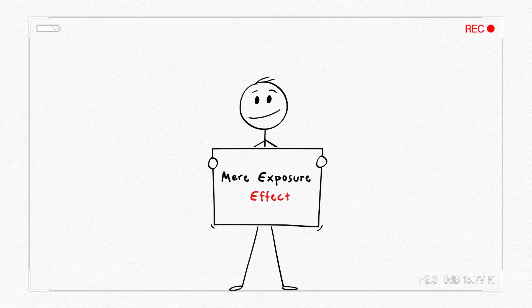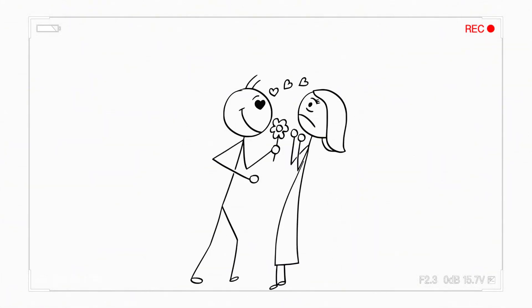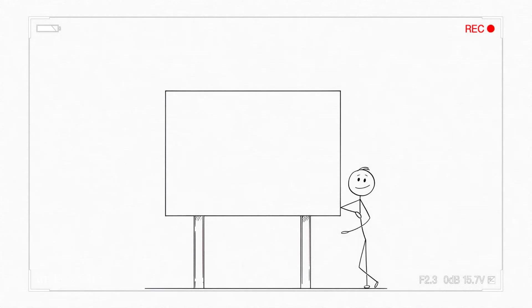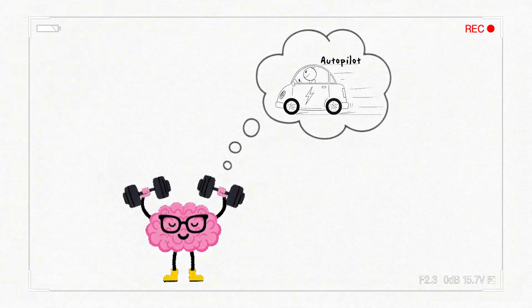This is called the mere exposure effect. The more you see someone, the more attractive they seem. So if your crush is in your class, gym, or TikTok feed, your brain's just been warming up to them on autopilot.